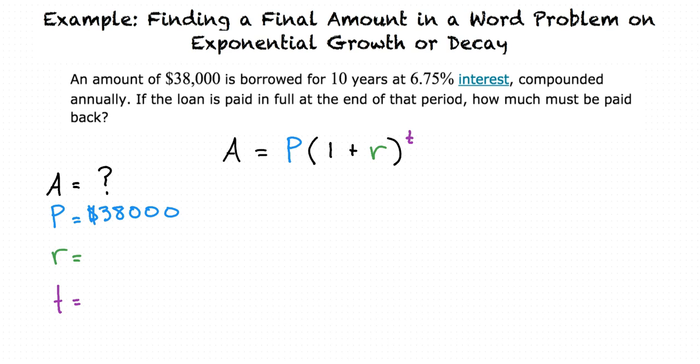The rate is 6.75%, and written as a decimal, it is positive 0.0675 because the principal will be increasing. Finally, the amount of time passed is 10 years.